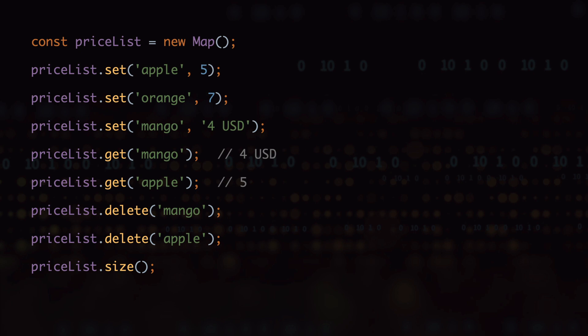Next we have the size property, which simply gives us the number of items we have in the hash table. For example, here we are getting 1 because we only have the orange item in the hash table. And finally we have the clear method, which removes everything in the hash table and makes it empty.